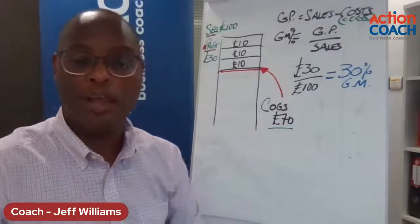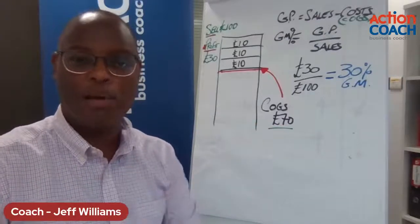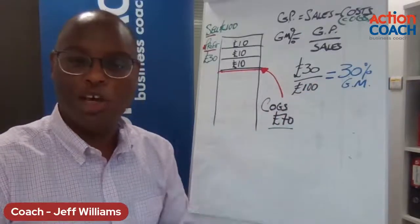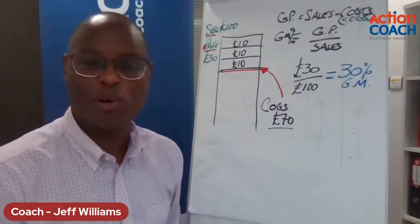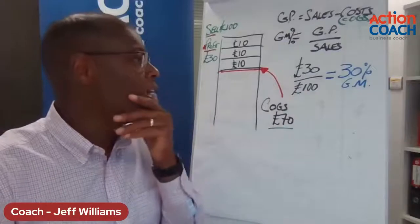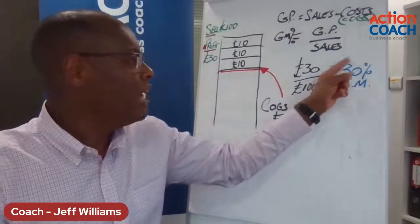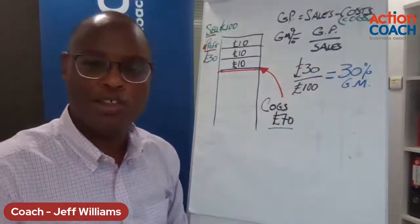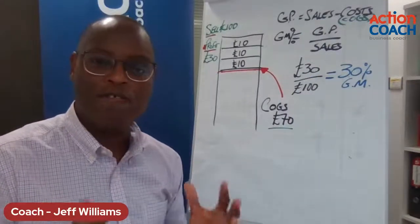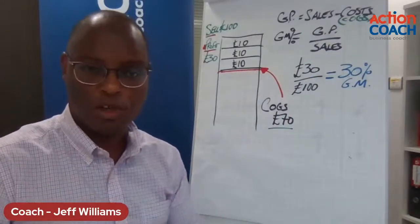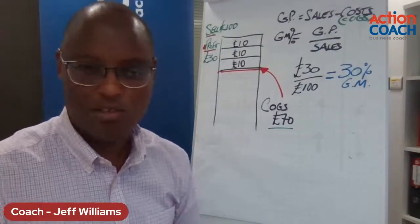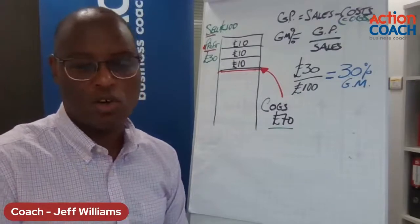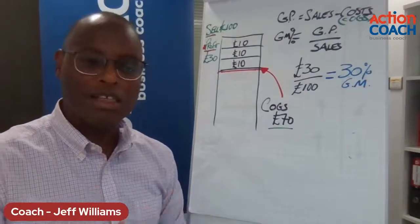Understanding what the average gross margin is across businesses in your sector helps you see where you're placed. Are you charging the right price? Knowing your gross margin and what it should be will help you charge the right price for your products. You may find that your industry average is 30% but you're only making a 20% gross margin — that gives you the opportunity to make 50% more gross profit. You may be underpricing your services.